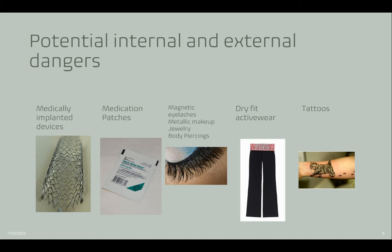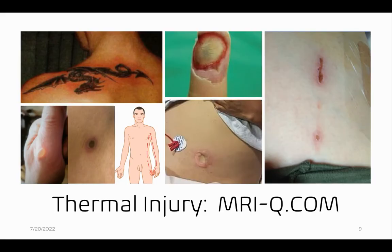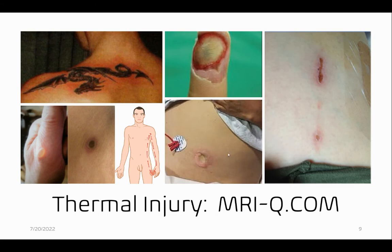Potential internal and external dangers for the MRI environment include medically implanted devices, medication patches, magnetic eyelashes, metallic makeup, jewelry, body piercings, dry fit active wear, and tattoos. The reason these objects are potential dangers is because metal or skin-to-skin contact can actually cause that skin to heat up in the MRI environment. Here we see some images from mriq.com of a tattoo-related thermal injury, skin-to-skin contact while the patient was in the MRI suite, a pulse ox thermal injury, an EKG lead thermal injury, and this is from the dry fit active wear like yoga pants that have thin metallic fibers within. So there is a burn danger for our patients as well.